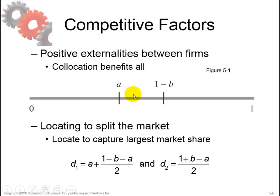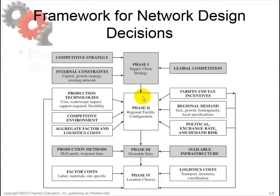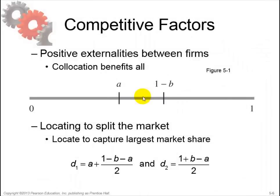If travel distance to the shop is important, you can decide to move your retail shop from the center at 0.5 to 0.25. The market is still split evenly, as each side of your shop captures its respective portion of the market. However, the transportation cost for customers is significantly lower when shops are located closer to them.